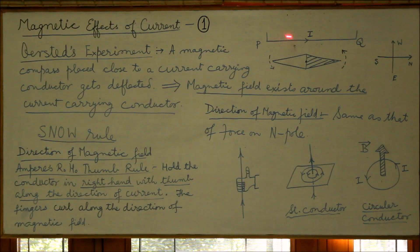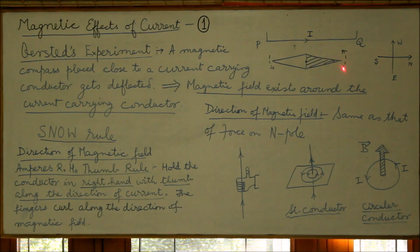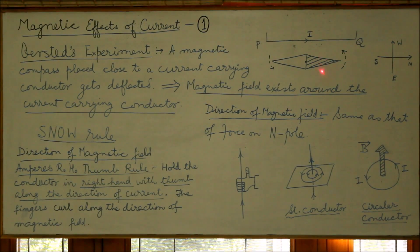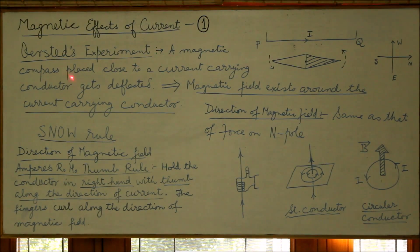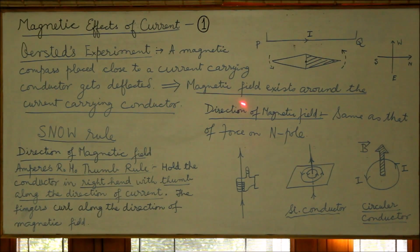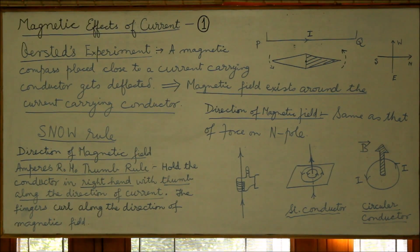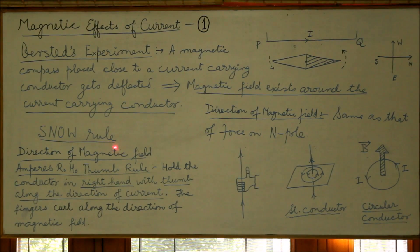However, if a current-carrying conductor is brought close to the compass, the compass immediately gets deflected — it rotates — showing that the current-carrying conductor produces a magnetic effect. So Oersted's experiment leads us to an important discovery: a magnetic compass placed close to a current-carrying conductor gets deflected, which implies that a magnetic field exists around the current-carrying conductor.